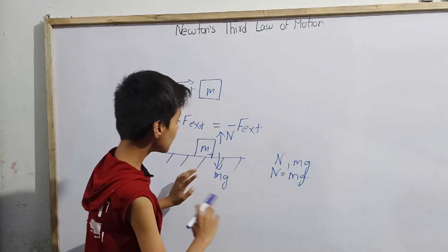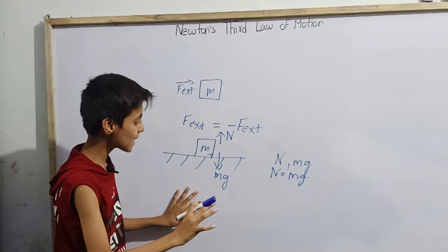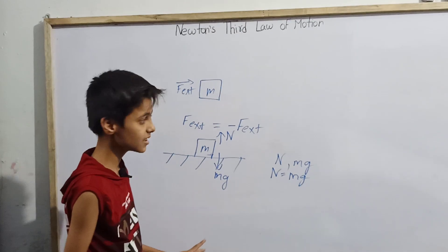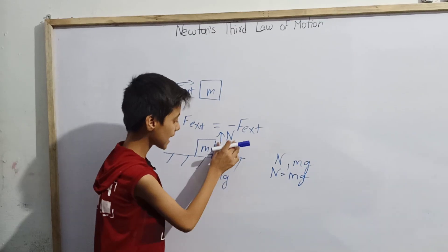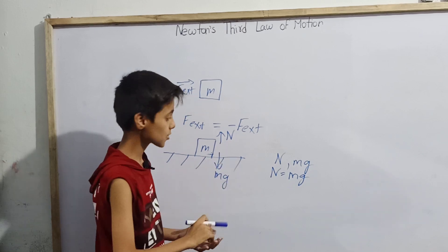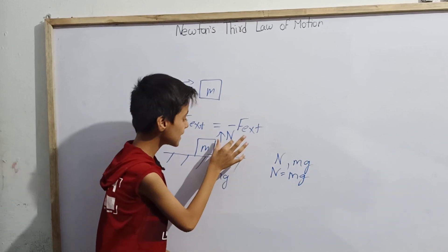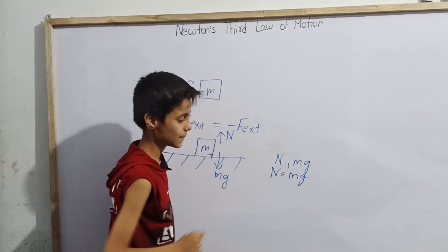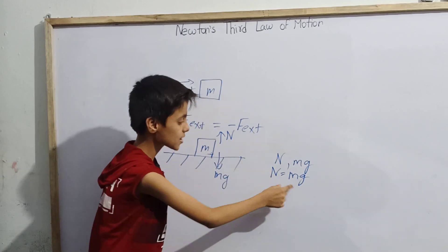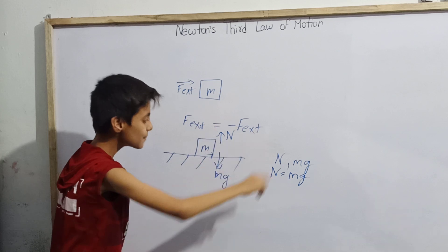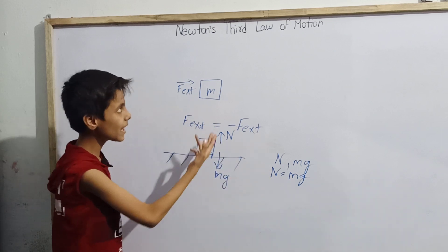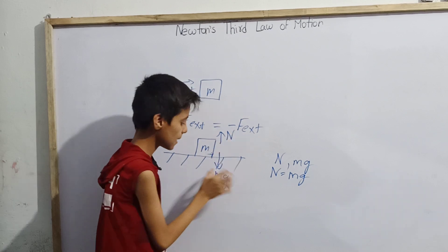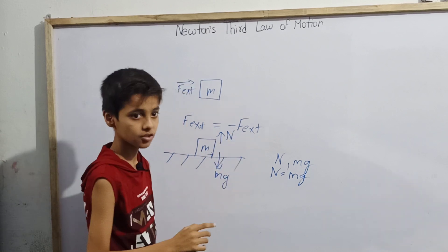Here, N is not the same as Mg. N is a different quantity and Mg, which is weight, is a different quantity. The magnitude is same and direction is opposite, but we can see that N and Mg are not of the same nature — those forces are different. So that is the main reason this situation is not valid under Newton's third law and N and Mg are not action-reaction forces.